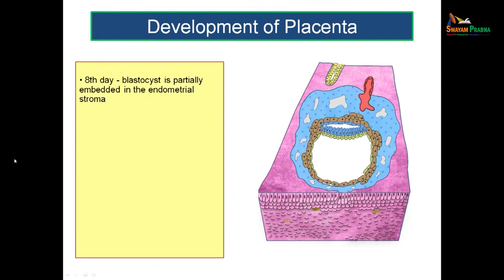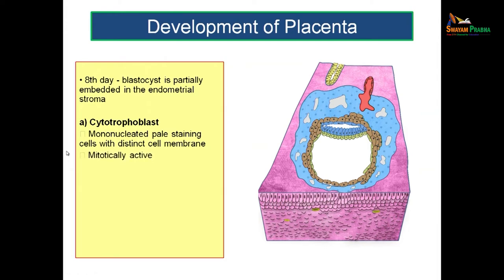By around day 8, the blastocyst is partially embedded in the endometrial stroma and the trophoblast differentiates into cytotrophoblast and syncytiotrophoblast. The cytotrophoblast consists of mononucleated, pale-staining cells with distinct cell membranes; they are mitotically active and give rise to cells that migrate into the syncytiotrophoblast. The syncytiotrophoblast is multinucleated with no limiting cell membranes, rapidly expanding and deeply stained.